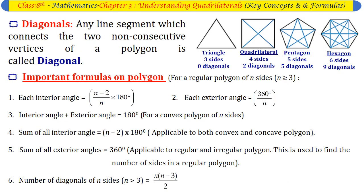Any line segment which connects two non-consecutive vertices of a polygon is called a diagonal. Triangle: three sides and zero diagonals. Quadrilateral: four sides and two diagonals. Pentagon: five sides and five diagonals. Hexagon: six sides and nine diagonals.